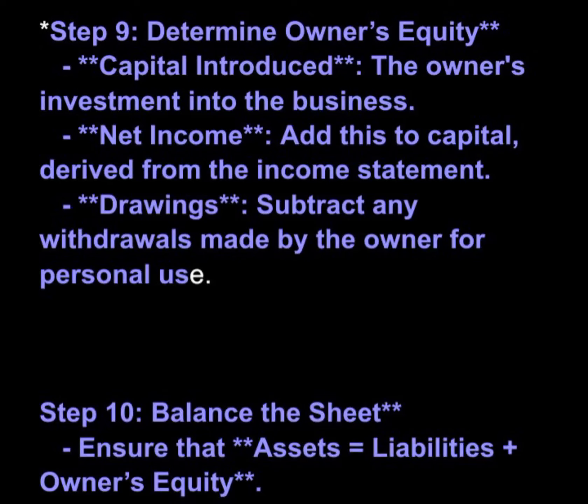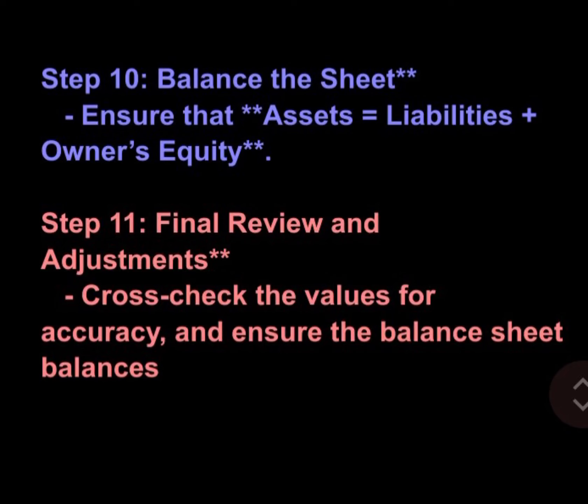Add current and non-current assets to calculate the total assets of the business. Amounts the business owes to suppliers. Cash on hand and bank balances. Payments received in advance for goods or services not yet delivered. Add up all current assets including equipment, office equipment, vehicles, and furniture.